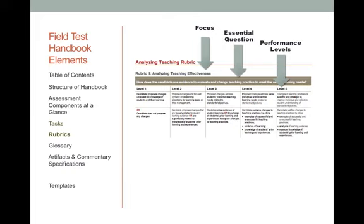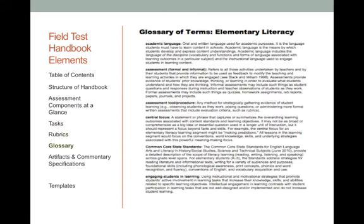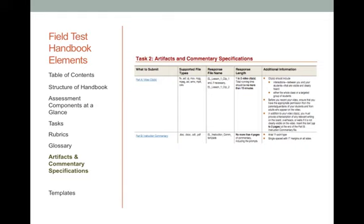To summarize, as you look at the other 11 rubrics in the TPA, you'll see these same key features: a focus, an essential question, and performance levels that tease out an analytical progression that moves you towards more sophisticated practice and shifts your focus from the teacher to individual students. The glossary of terms is found after task 4 and is hyperlinked throughout the document. The glossary explains key terms such as academic language or central focus of a learning segment, and many of the glossary terms describe features of academic language, so it can be a helpful resource.